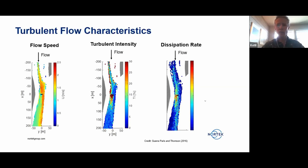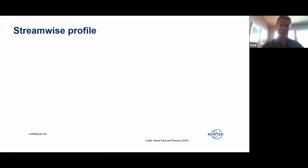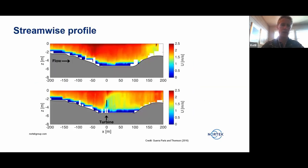Now, if we look at the turbulent intensity instead, we see that the situation is different. Behind the barrier, the turbulent intensity is very high. And the same is true for the dissipation rate. So obviously, if you want to measure what's going on behind here, you need a different type of instrumentation than a normal average current meter.